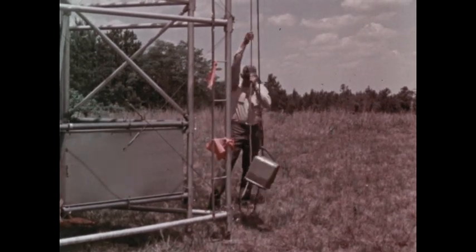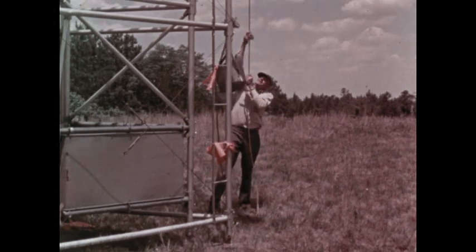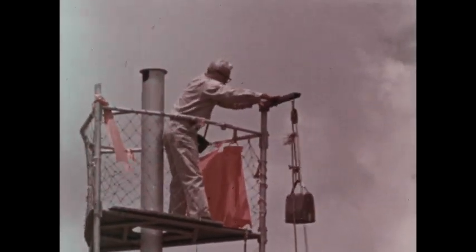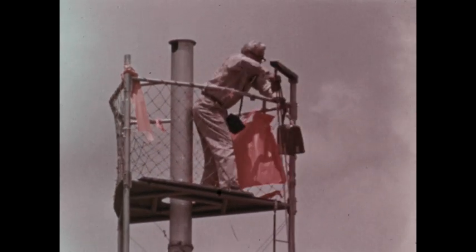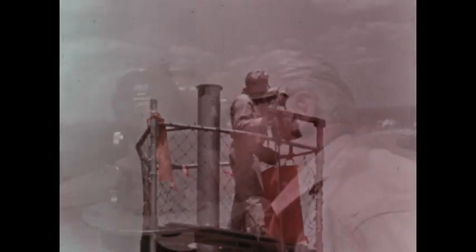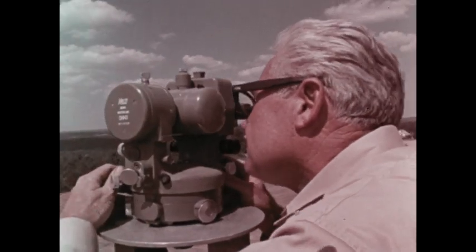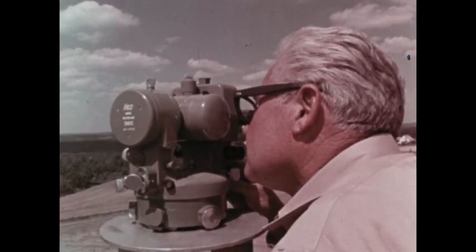The theodolite is hoisted to the top of the tower. From the tower, the job of triangulation is the same as it was on the ground. The surveyor carefully measures the needed angles. Here, because of the greater distance involved, sighting is done on a flashing light at the top of the other towers. The flashing light is easier to sight on than a rod.